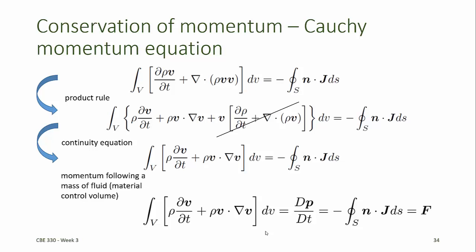The substantial derivative is defined in equation B58 in Appendix B of the notes. The substantial derivative is the derivative of a quantity following a particular mass of material. Since this is the rate of change of the momentum on a defined set of mass of material, or a material control volume, this by definition must be equal to the force acting on the material in that control volume.